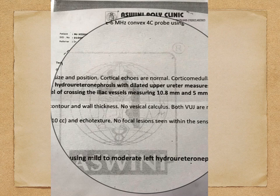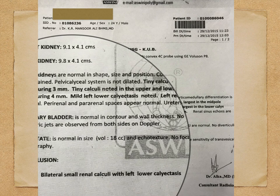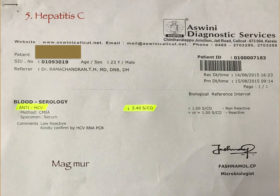The first USG showed 10.8x5 mm stones — multiple large renal calcula. In the second scan, bilateral small renal calcula of only 3 mm and 4 mm remained. So even though a stone above 8 mm will not easily pass through the ureter, homeopathy can effectively cure this type of blocked stones also.